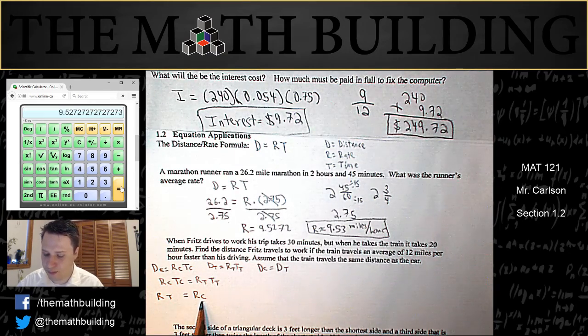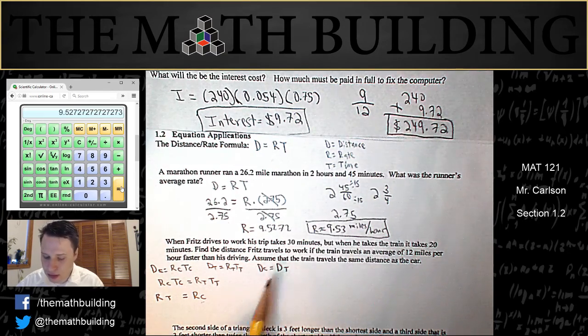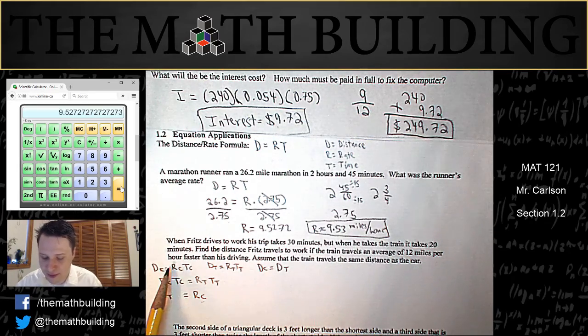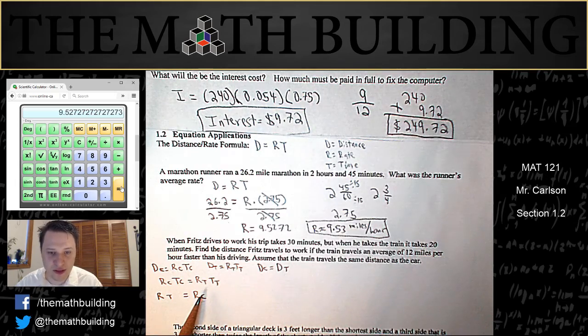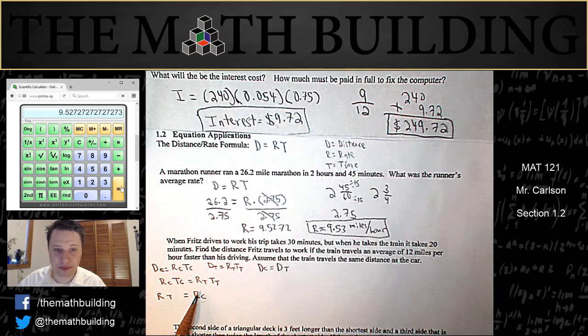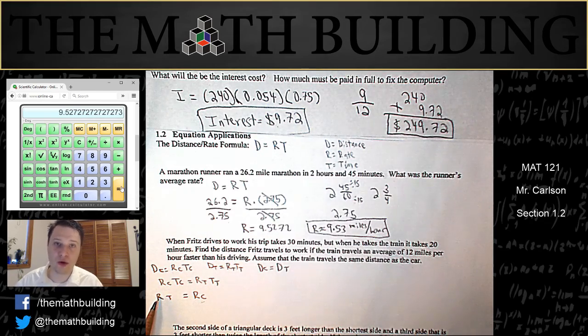So let's make this equal. It says the train is 12 miles per hour faster than the car. So this one is 12 bigger than this one. So for example, if the rate of the car was say 8, then that means the rate of the train would be 20. So how do we make this equation equal?